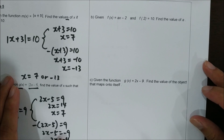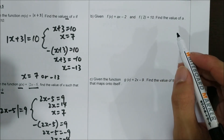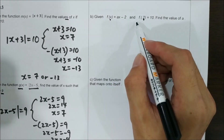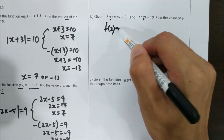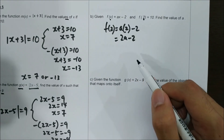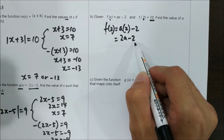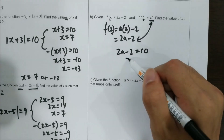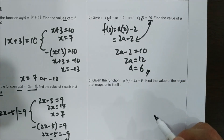Given f(x) equals ax minus 2 and f(2) equals 10, we want to find the value of a. We substitute x equals 2: f(2) equals a times 2 minus 2, which is 2a minus 2. Since f(2) equals 10, we have 2a minus 2 equals 10, so 2a equals 12, giving a equals 6.